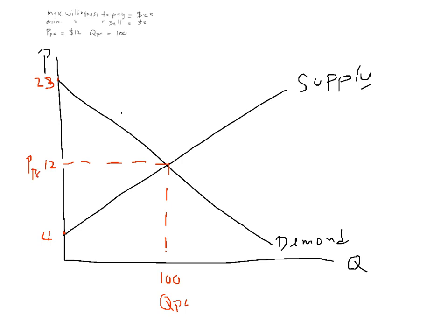Given this information, calculate consumer surplus, producer surplus, and show total welfare. Consumer surplus is the difference between the maximum willingness to pay and the equilibrium price, multiplied by the quantity sold. Producer surplus is the difference between the selling price minus the minimum willingness to sell, multiplied by the equilibrium quantity. Total welfare is consumer surplus plus producer surplus.